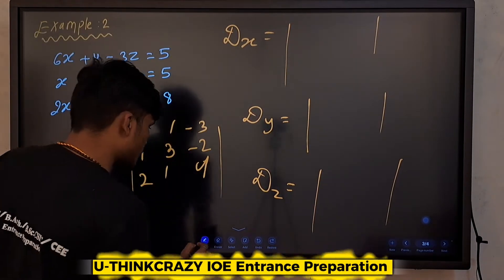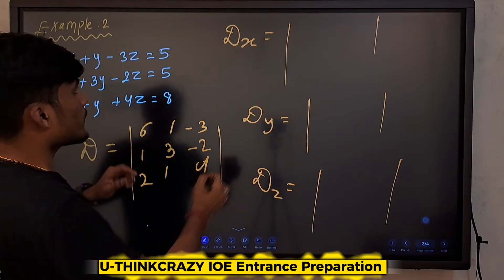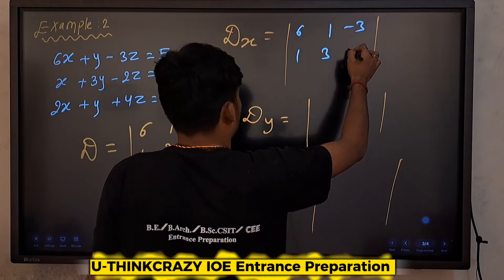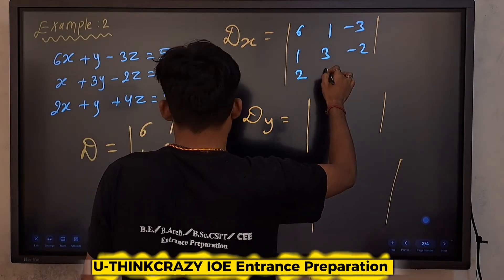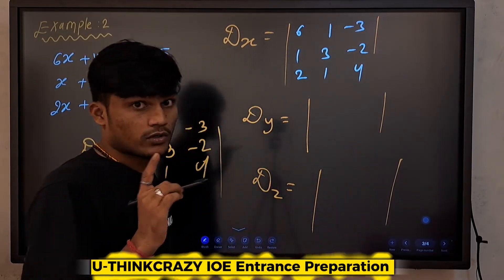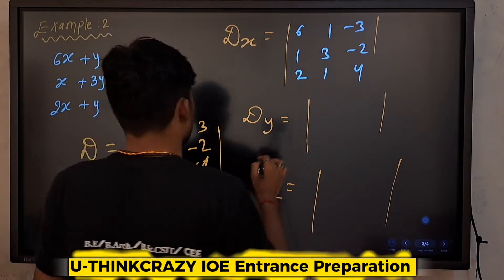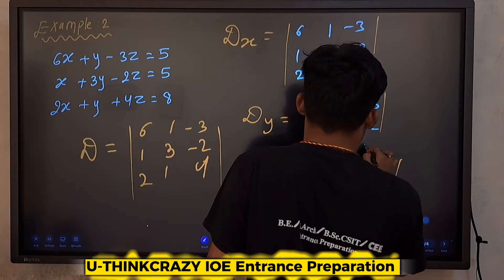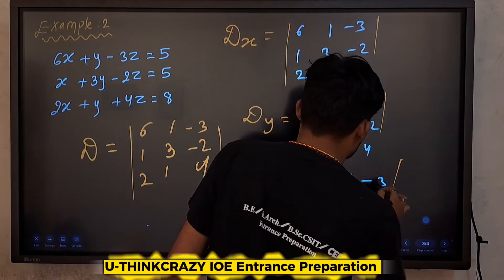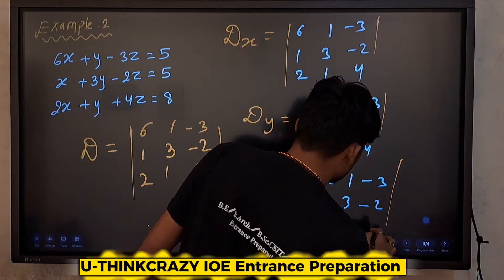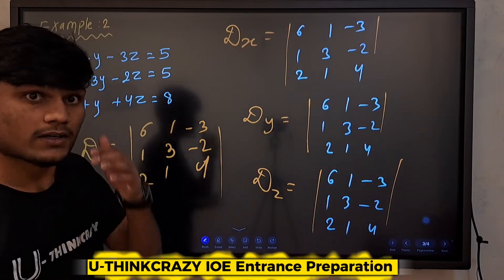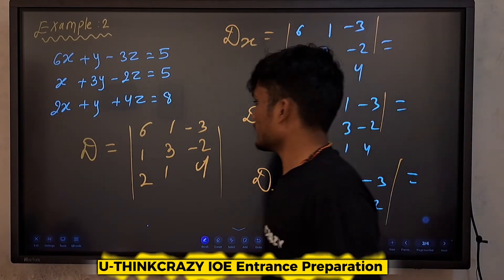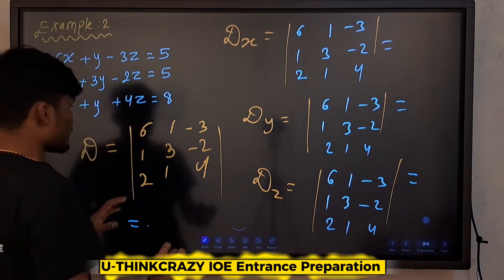Let's start. Minus two, okay. Two, one — in the matrix. Okay right, then one, three, one, three, minus two. You can join our pre-classes also — pre-engineering, pre-medical.